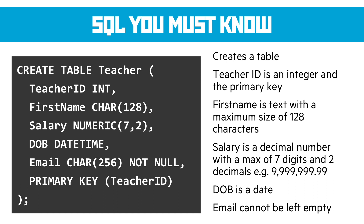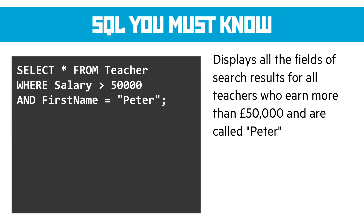Date of birth is a date/datetime data type. Email is characters again, maximum of 256, but it can't be empty — that's what NOT NULL means. The last line tells it what the primary key is, which is teacher_id. To find something in a database we use a SELECT query: SELECT * FROM the teacher table WHERE salary is greater than £50,000 AND first_name is Peter — returning all fields for those results.